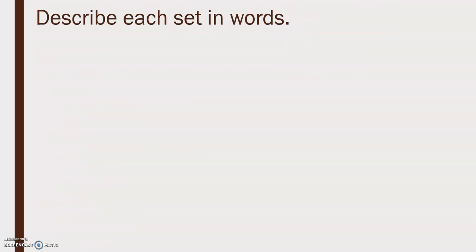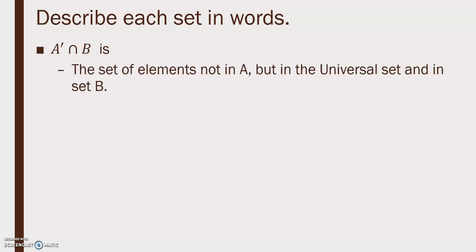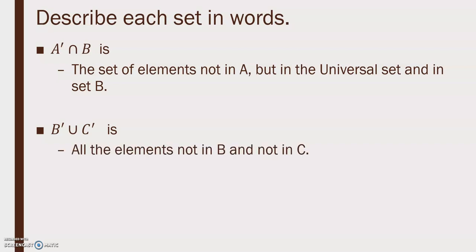Describe each set in words. A' intersect B is the set of elements not in A but in the universal set and in set B. B' union C' is all the elements not in B and not in C.